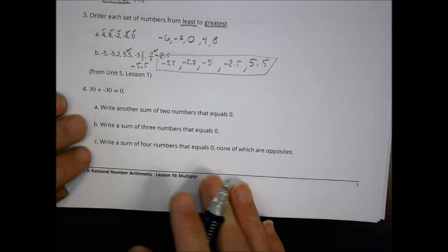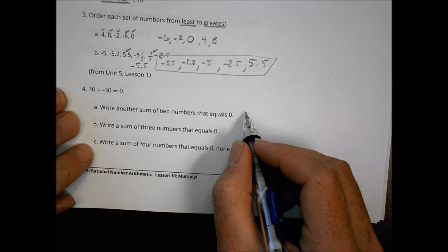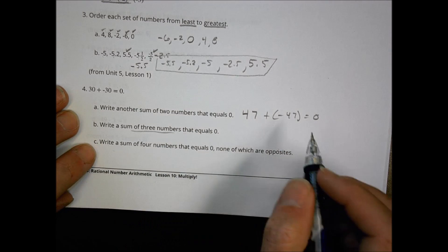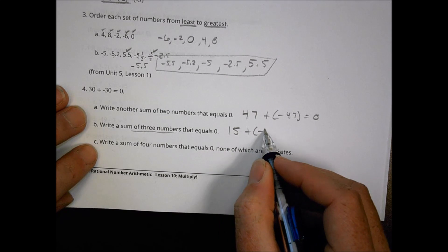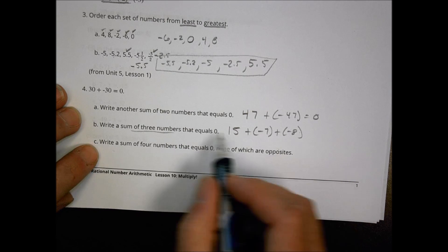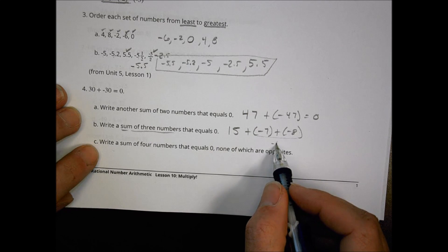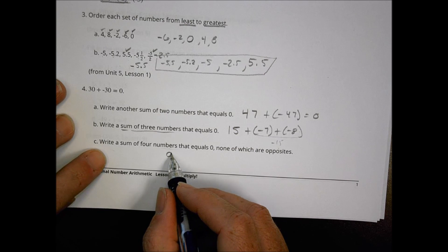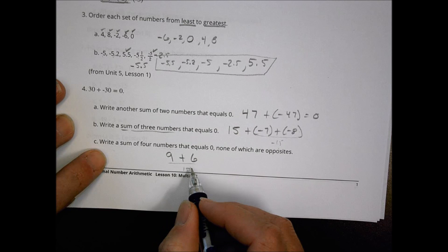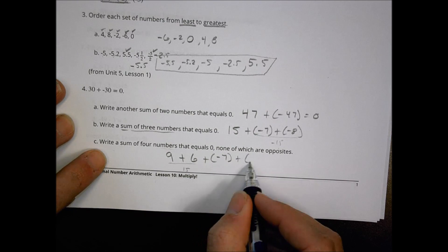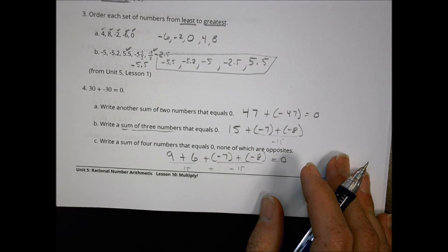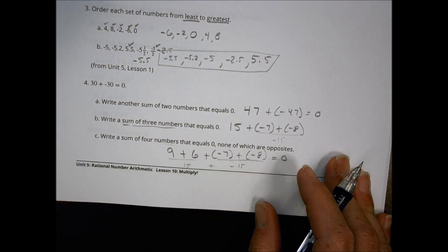Number four: 40 plus negative 30 equals zero. Write another sum of two numbers that equals zero — you could say 47 plus negative 47 equals zero. Write a sum of three numbers that equals zero — maybe 15 plus negative 7 plus negative 8, since 7 and 8 together make negative 15, and adding positive 15 gets you to zero. Write a sum of four numbers that equals zero — none of which are opposites — for example, 9 plus 6 plus negative 7 plus negative 8. Come up with your own so it doesn't look like everyone copied.